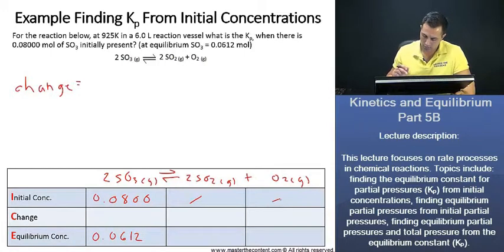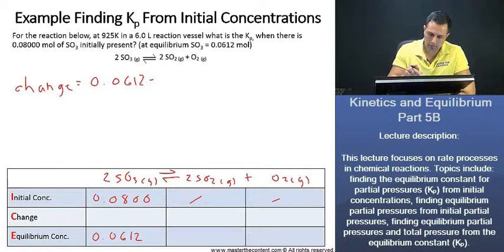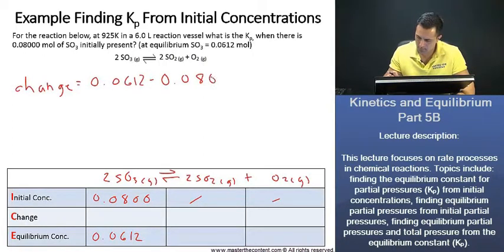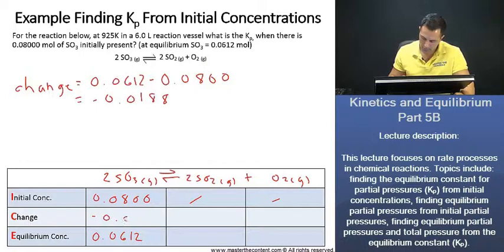The change is just going to be our equilibrium concentration, which is 0.0612, minus our initial concentration, which is 0.0800. This gives us a value of negative 0.0188. So this value here is 0.0188.